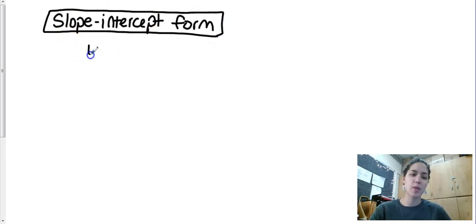So slope intercept form on the board we wrote y equals mx plus b.